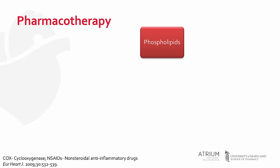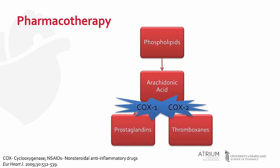Pharmacotherapy for the treatment of pericarditis includes medications that work on the arachidonic acid pathway to inhibit inflammation. Arachidonic acid is an omega fatty acid produced from phospholipids. It is then broken down into prostaglandins and thromboxanes by cyclooxygenase enzymes 1 and 2. Prostaglandins are associated with vasodilation, fever, platelet inhibition, and decreased gastric acid secretion, whereas thromboxanes produce bronchoconstriction and platelet aggregation.